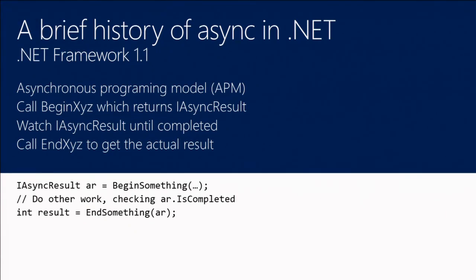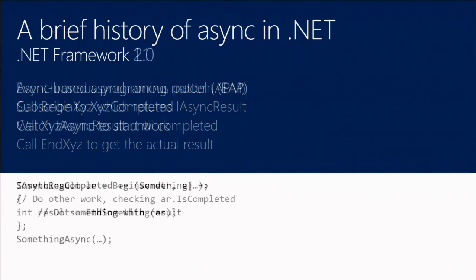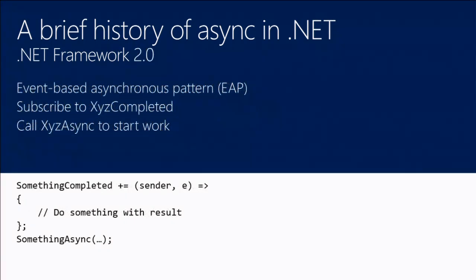This is kind of annoying — nobody really likes doing a lot of polling. So in .NET 2.0 we added the Event-Based Asynchronous Pattern, EAP. This resolved the issue with constantly polling your IAsyncResult. In this pattern you subscribe to Something Completed, then you do some async work. When your async work is done, it will call the event and you can do something with the result. So you didn't have to poll anymore, but you also had a very large lack of visibility into what was actually going on, and that was somewhat problematic.